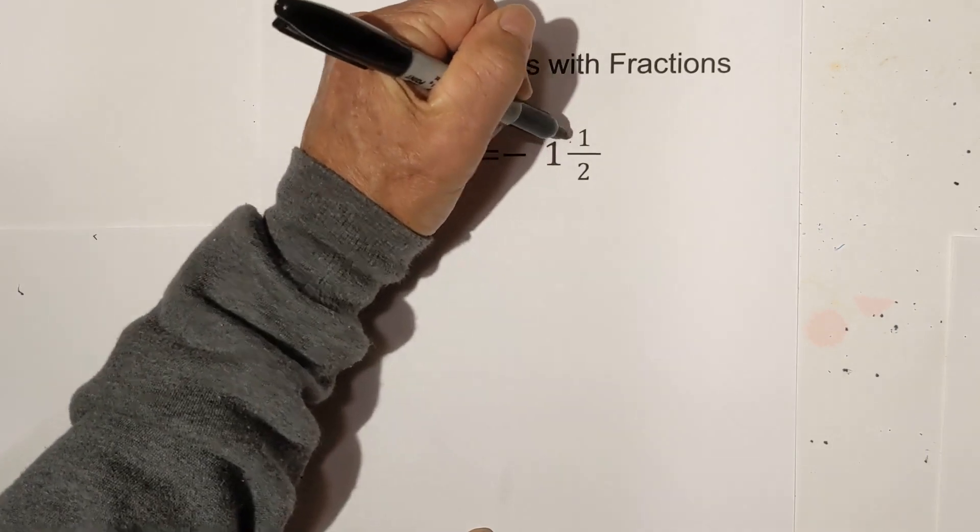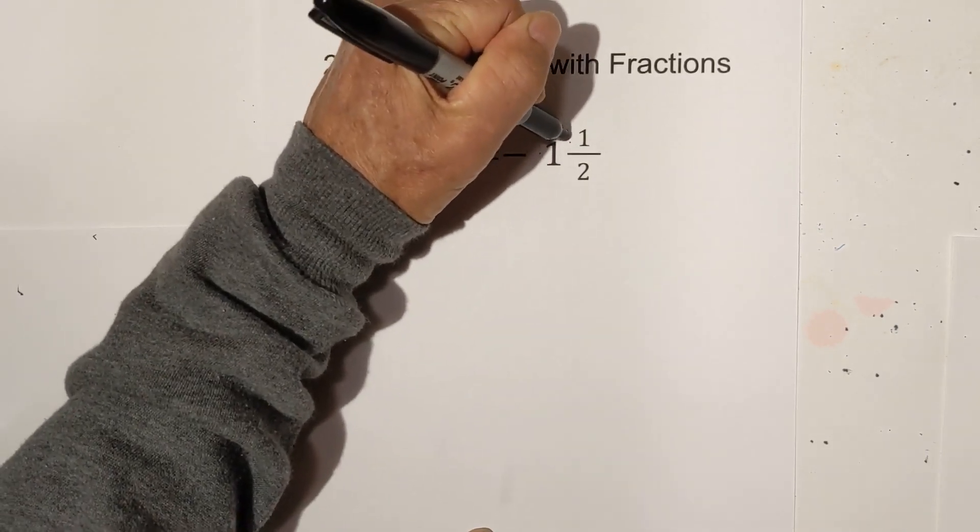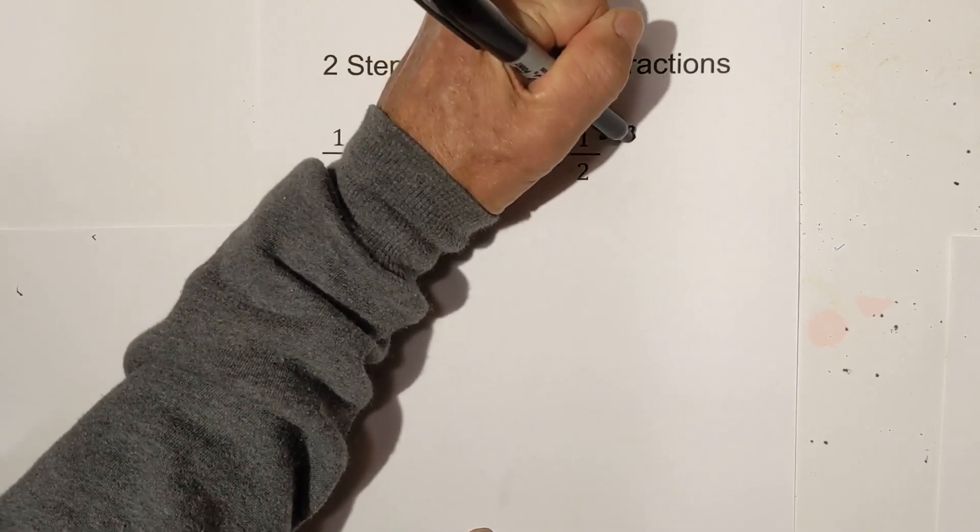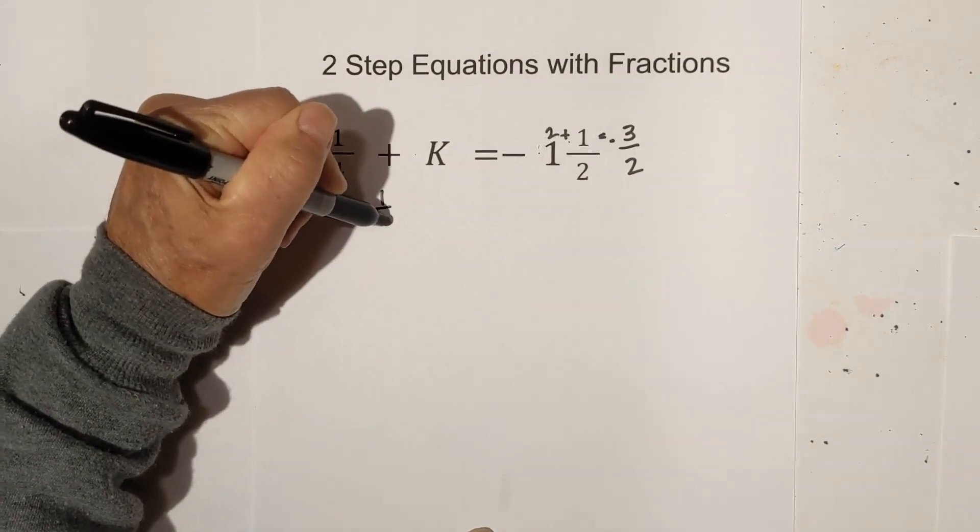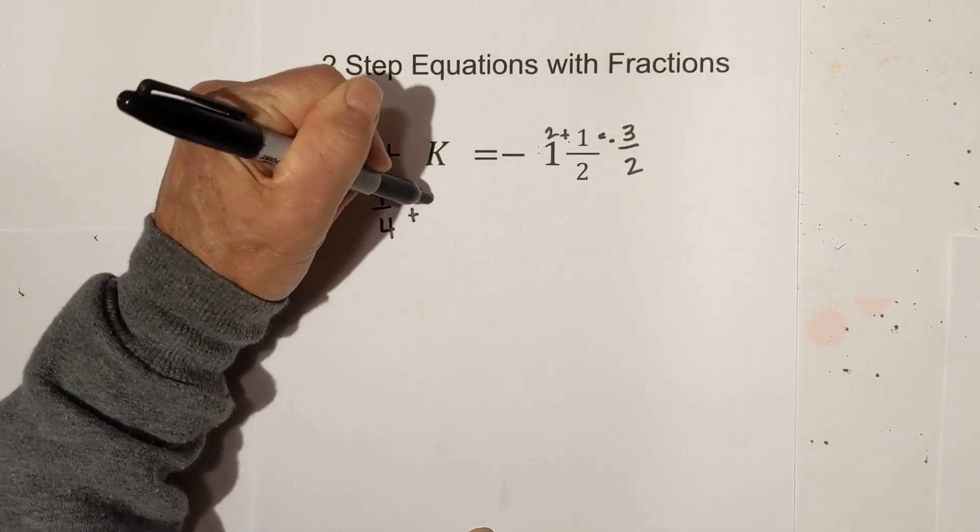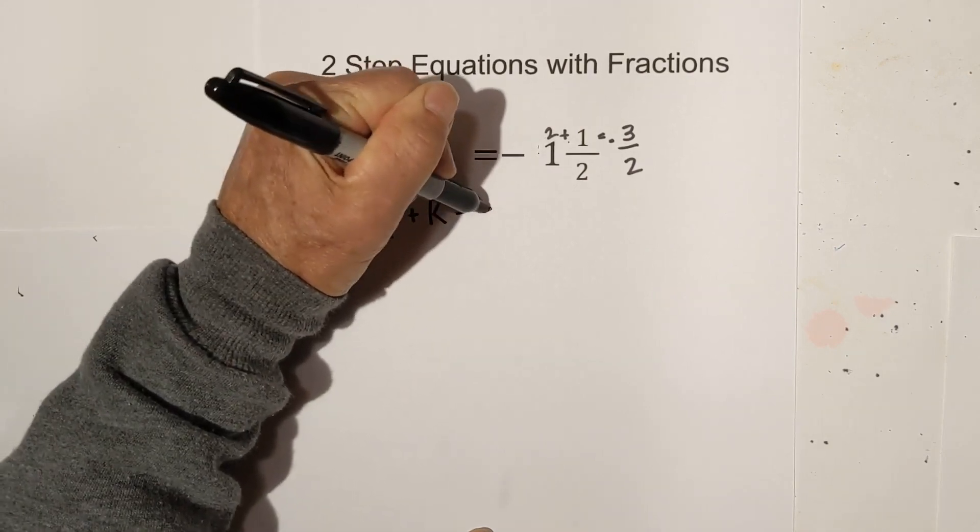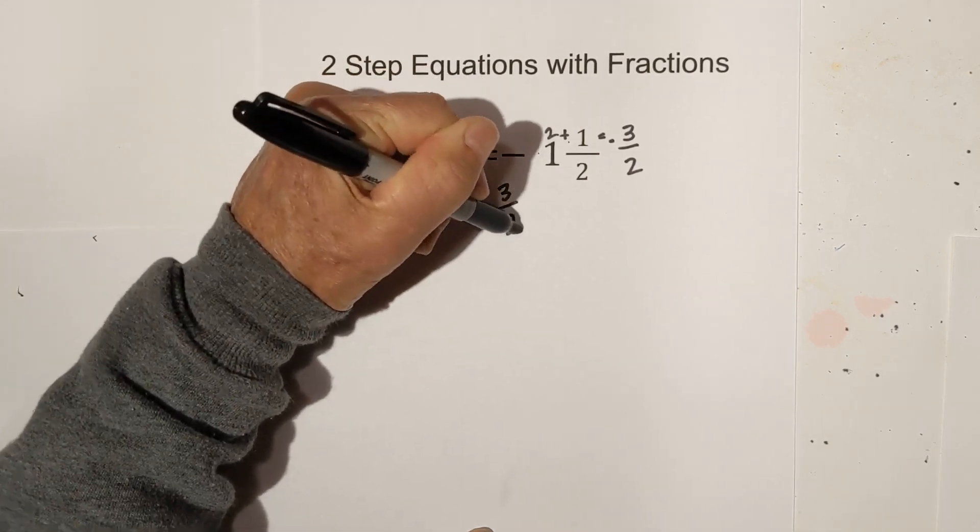So 2 times 1 is 2, plus 1 equals 3. So we have a negative 3 halves. So let me rewrite this. We have 1 fourth plus k equals a negative 3 halves.